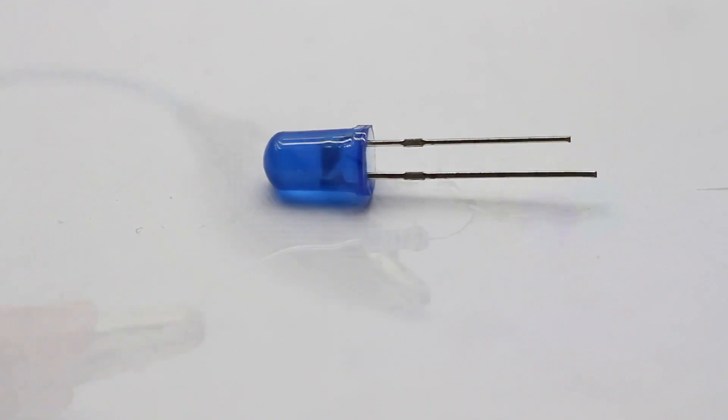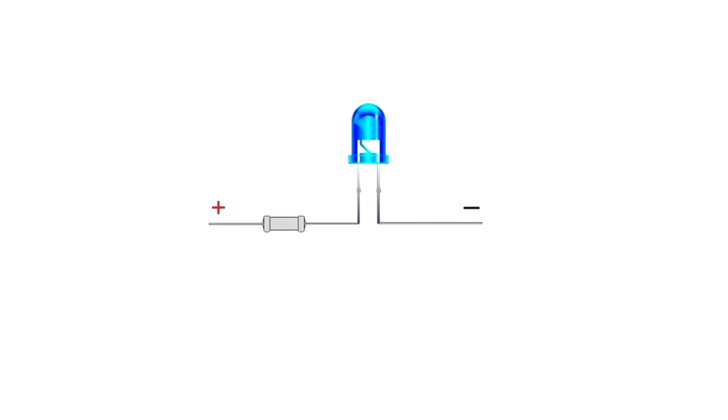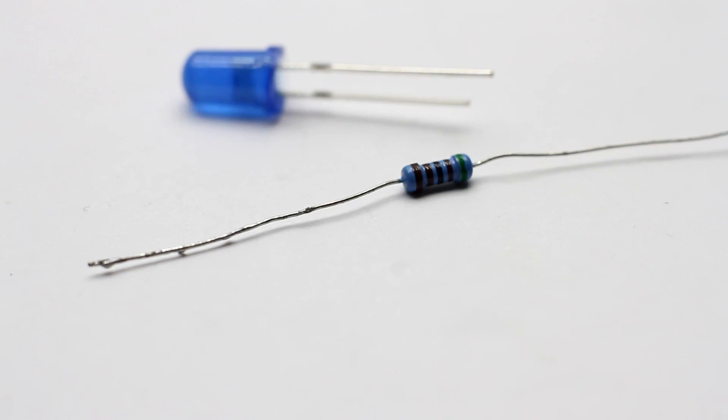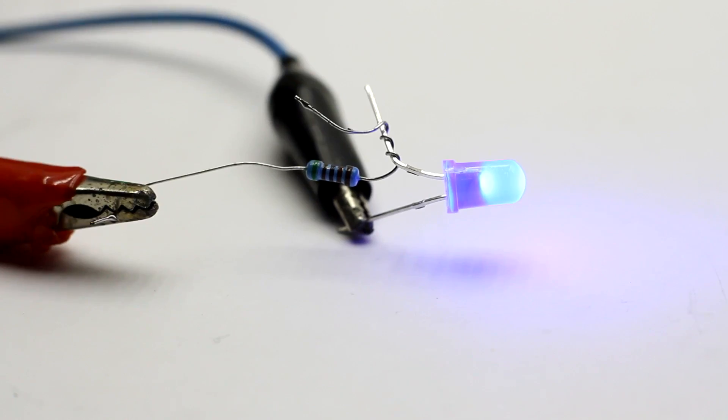If the load, for example LED, isn't very powerful, it isn't necessary to stabilize the voltage, enough to limit the current. LED has a certain glow of voltage. That is, it will be in the role of the regulator and the load at the same time.